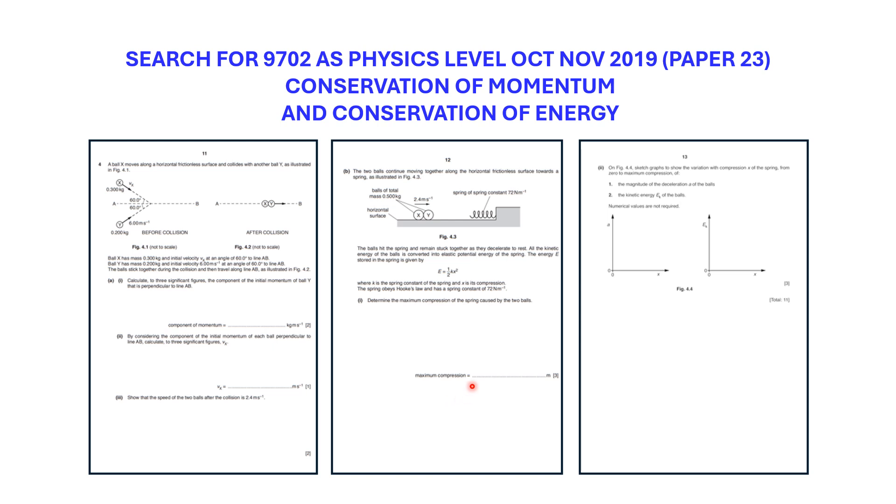Let's solve this question together with multiple steps of momentum and energy. You can download this question from online resources. Just search for 9702 AS Physics Level from October-November 2019, paper 23. This question is number 4 from this exam with 11 marks, so it's a long question. Stay with me through this process that can be repeated for any question like this.